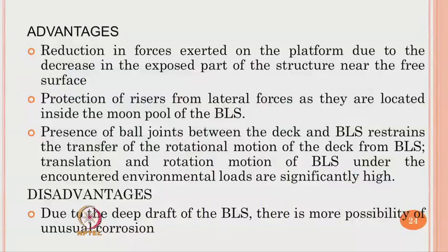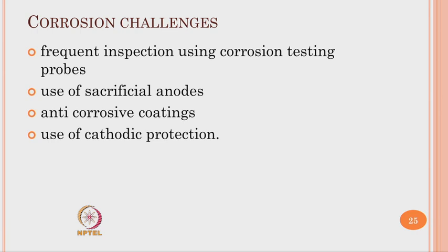The essential disadvantage is that due to the deep draft of BLS, there is more possibility of unusual corrosion. These challenges can be addressed by inspecting using corrosion testing procedures, using sacrificial anodes, applying anti-corrosive coatings, or using cathodic protection. The ball joints are kept above water level, so they are not corroded, while the BLS in the corrosive media can be treated by the methods explained.